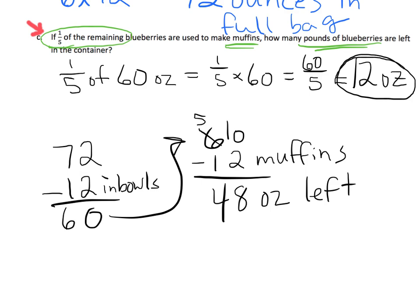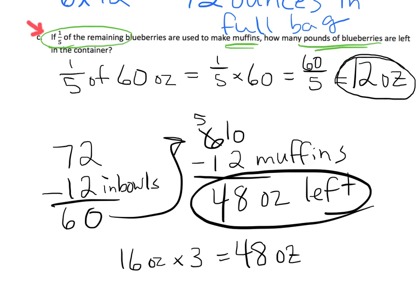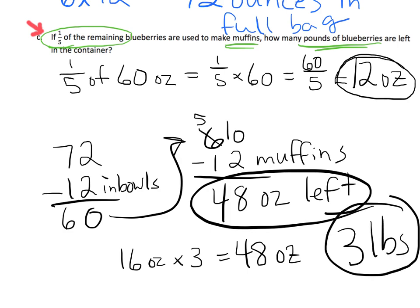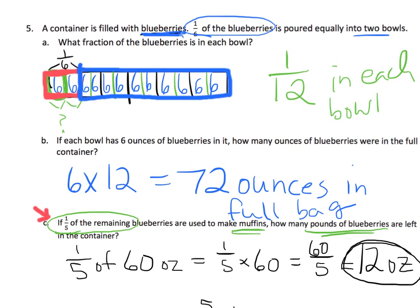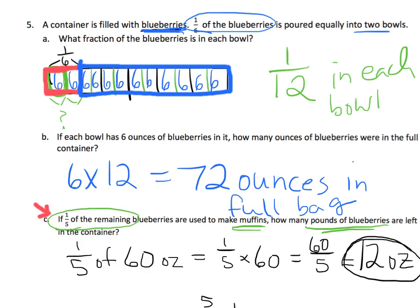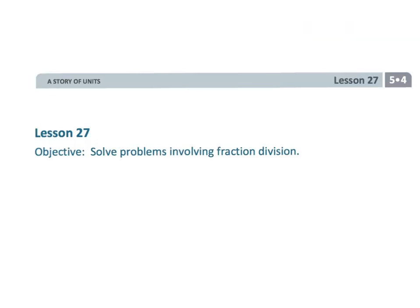The question asks how many pounds that is. We know that sixteen ounces is a pound, and sixteen ounces times three equals forty-eight ounces, so forty-eight ounces equals three pounds. That wraps up part C. Parents and teachers, there are a lot of calculations on this problem — don't let your students just watch the video. Make sure you pause and rewind frequently so students really understand what's going on. That wraps up grade five, module four, lesson twenty-seven.